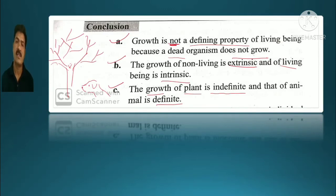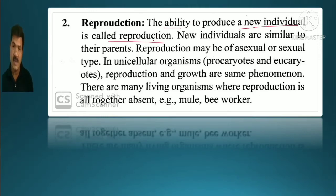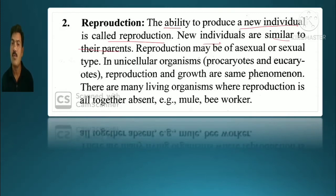Now the next property is reproduction. Reproduction — the ability to produce a new individual — is called reproduction. Every living organism gives birth to one like itself. New individuals are similar to their parents. Reproduction has two types: asexual and sexual.